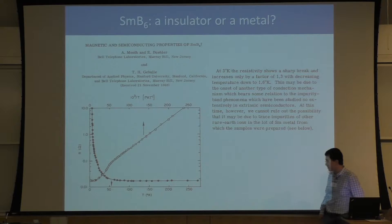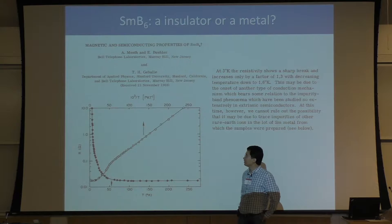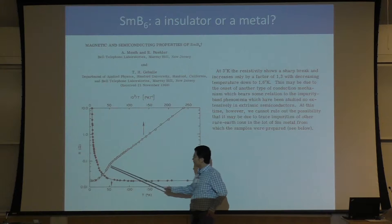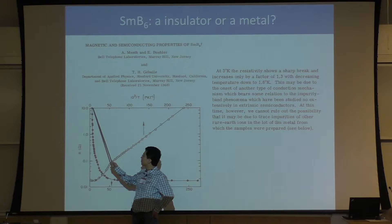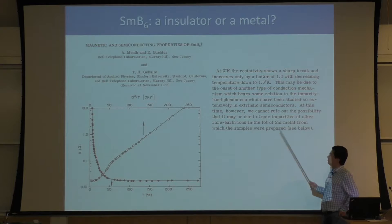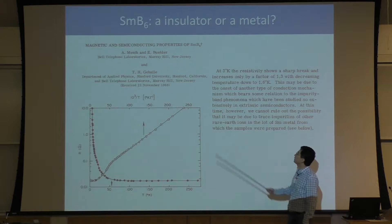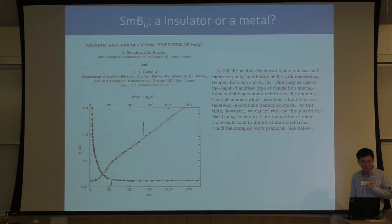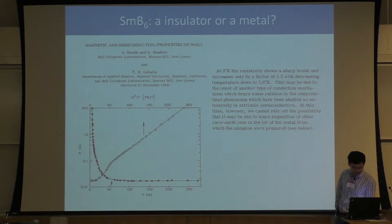Whenever you read an experimental paper, it's more important to read the caption and the text, not just the figures. For this figure, we see a very nice textbook insulating behavior, but they only showed data above 4 Kelvin. If you read the paper carefully, they actually mentioned they measured below 4 Kelvin but chose not to show those data points — because if you go to 3 Kelvin, this exponential increase stops and starts to saturate.